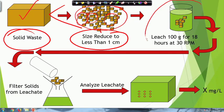Once you have the size reduction to less than 1 centimeter, you leach 100 grams for 18 hours at 30 rpm. The reason for 30 revolutions per minute in a rotator is to increase the contact. We want maximum reaction to take place — whatever things in the solid phase could possibly come to the liquid phase, we want them to come. That way we can have a more conservative estimate of potential environmental pollution.